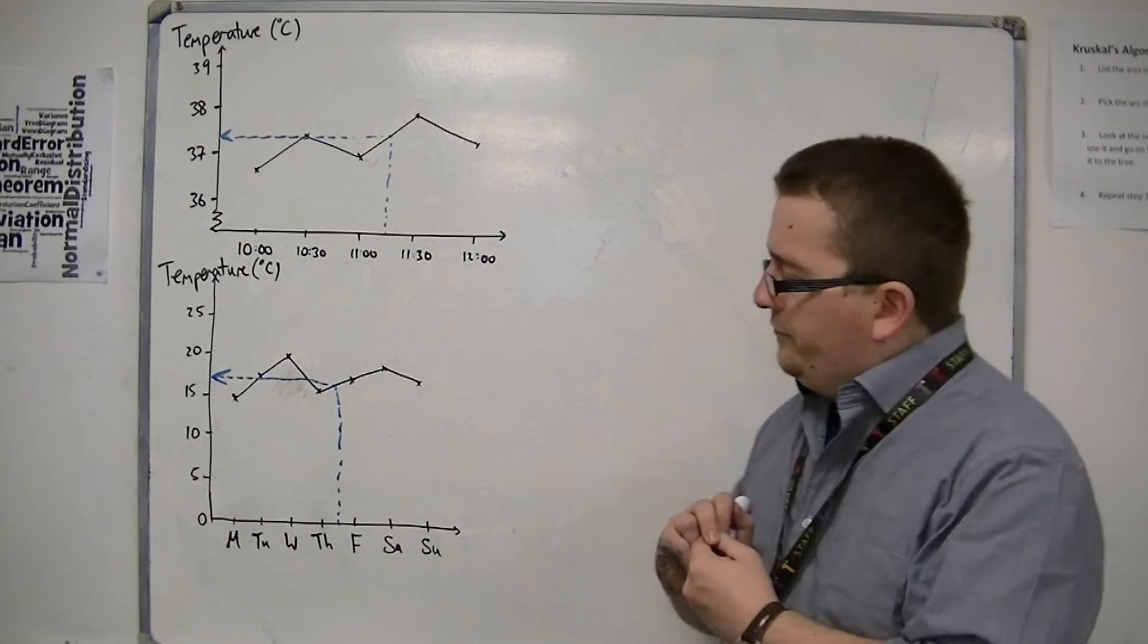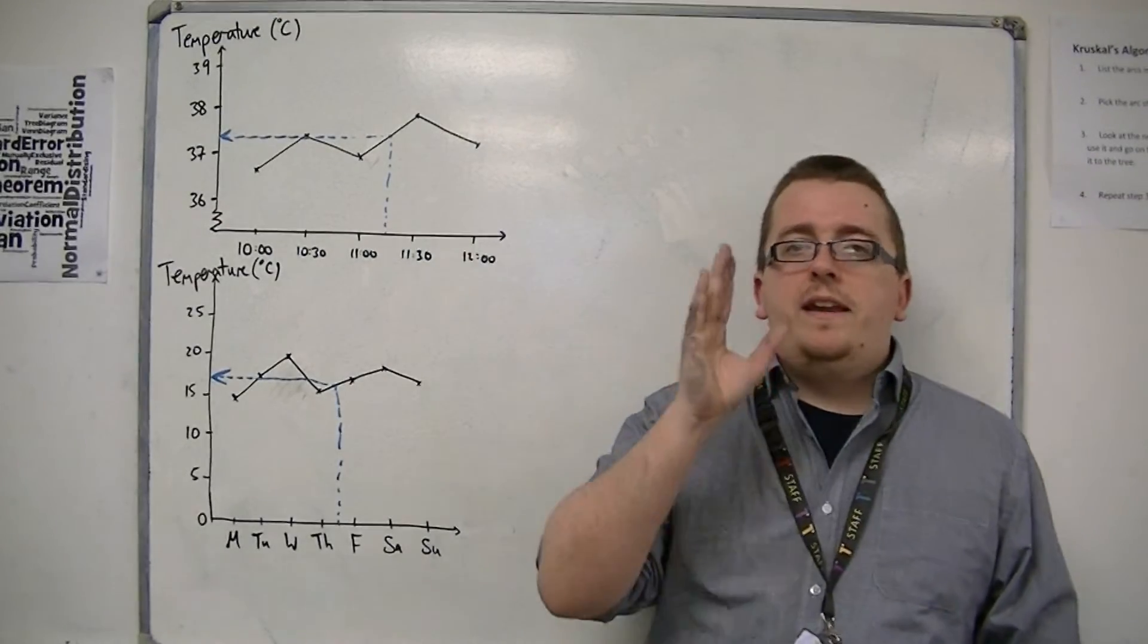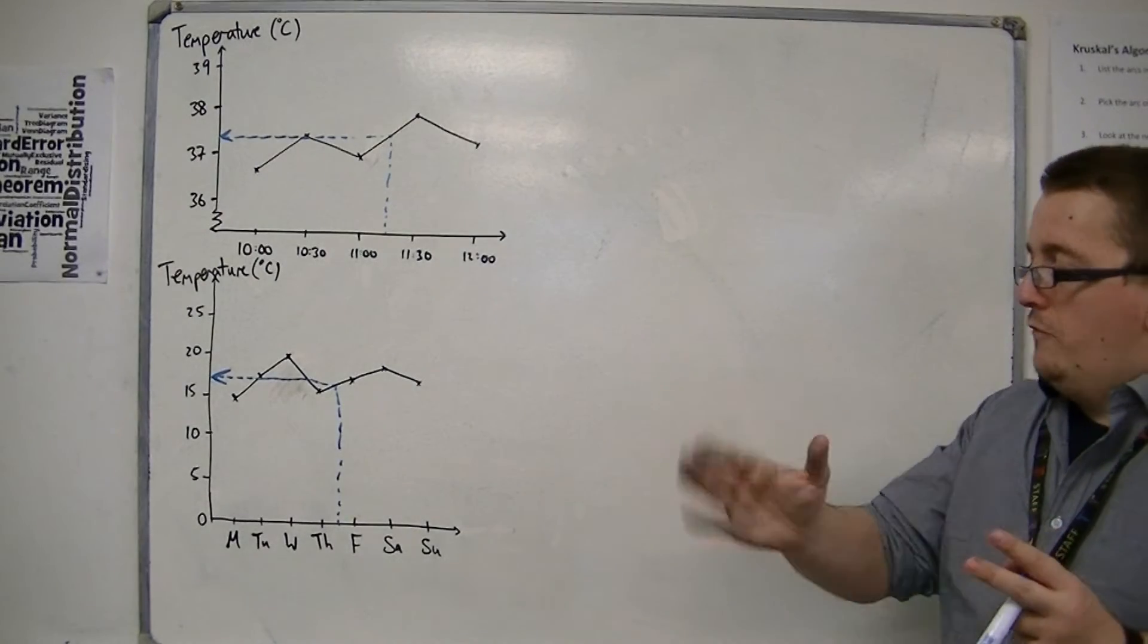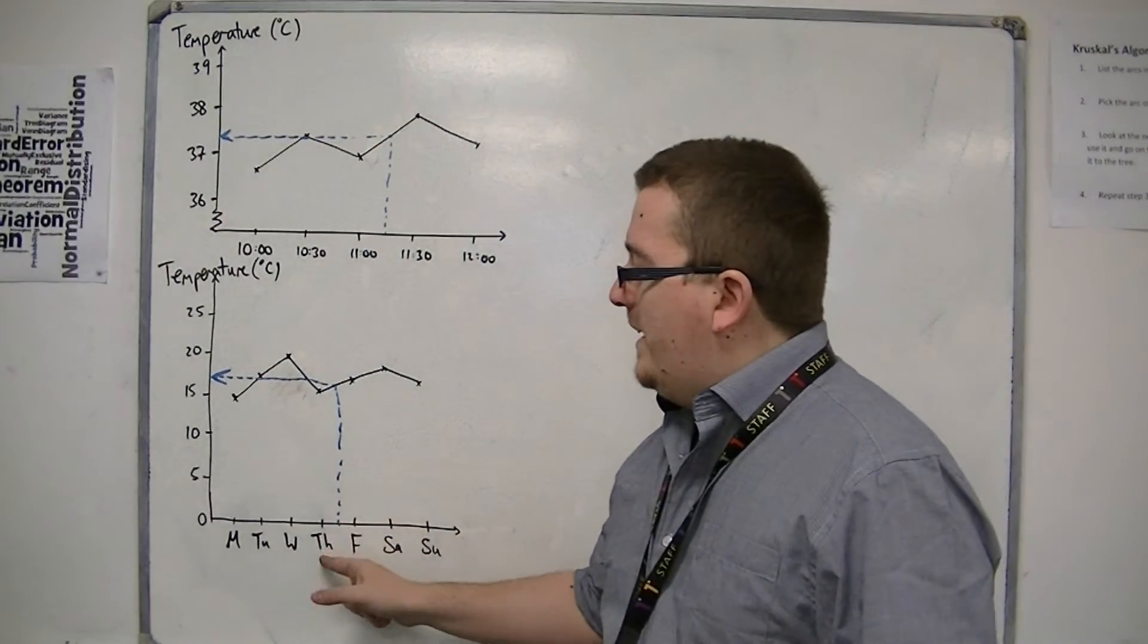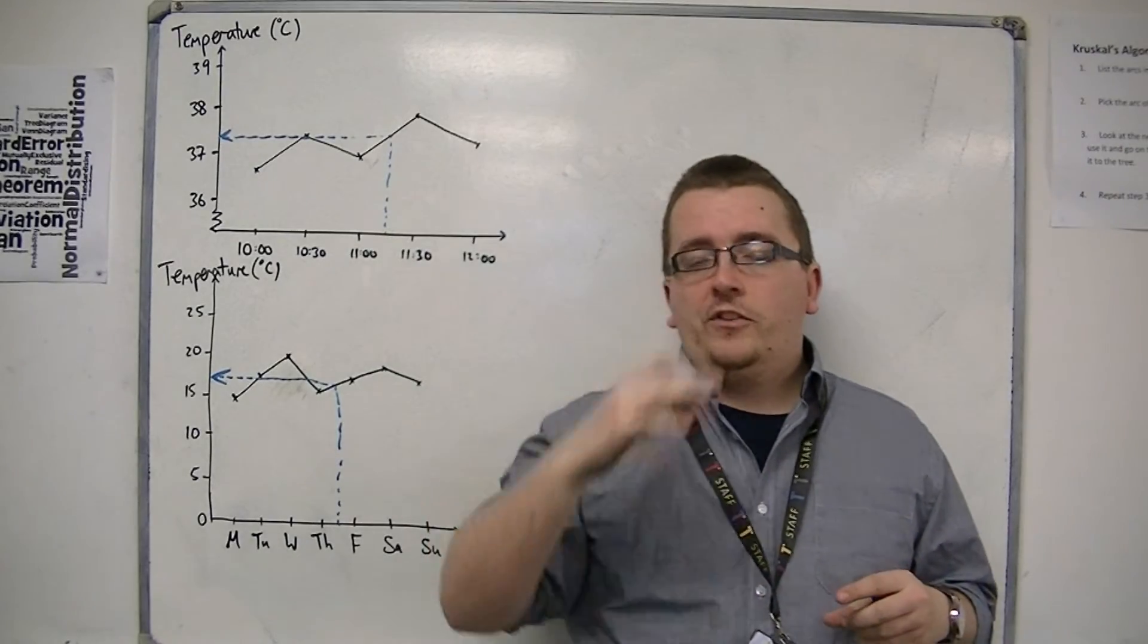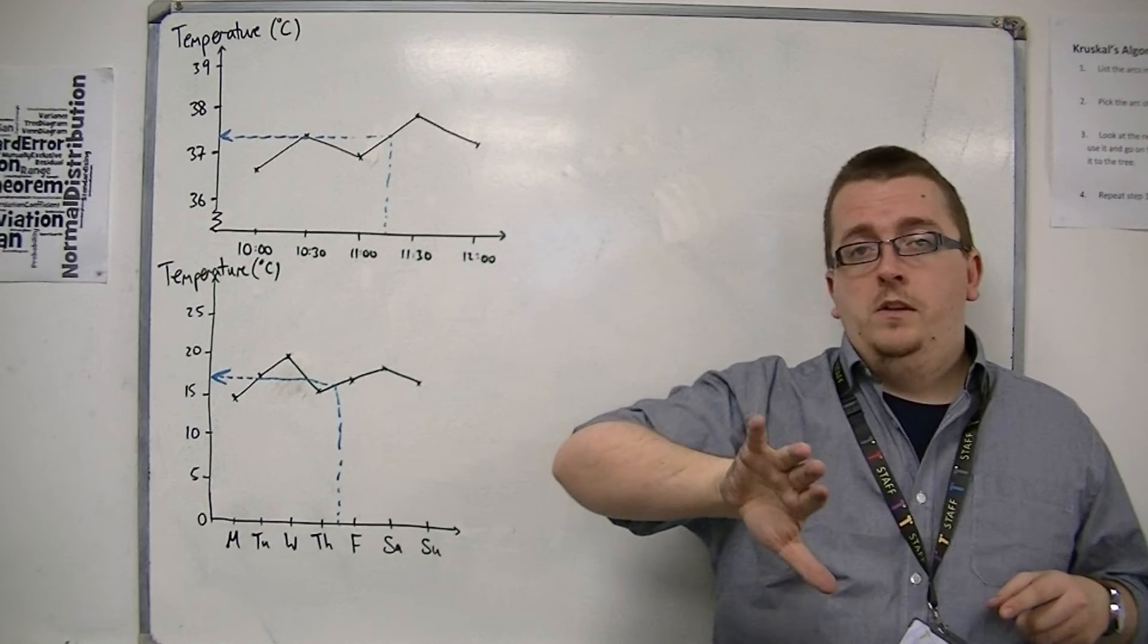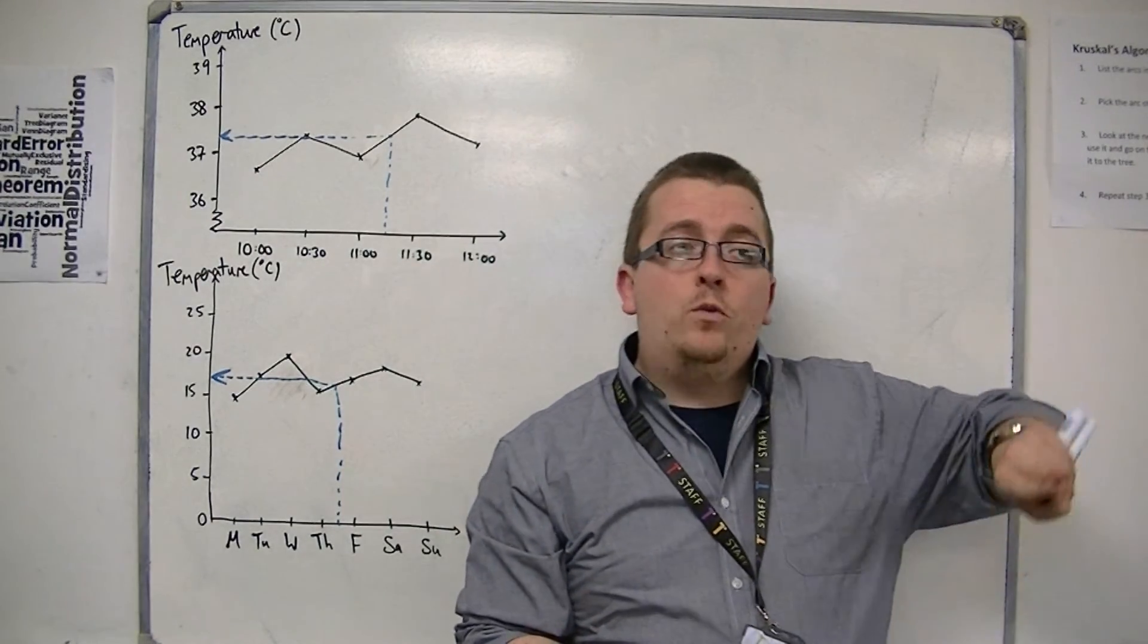The problem with that is that I took these readings at midday. Okay? At midday on every day of that week. So between midday on Thursday and midday on Friday, you would expect the temperature to have dropped. Because it's going from midday into the evening, as it will get colder. Okay? Then midnight, then the early hours of the day, and then it will get hotter again.